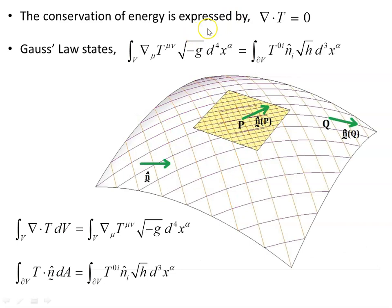The conservation of energy is expressed by ∇·T — the divergence of the energy-momentum tensor being equal to zero, as we saw in the last video. Gauss's law shows that an integral over a four-volume of the divergence of the energy-momentum tensor is equal to a spatial flux integral over a surface, where n-hat represents the normal vector to the surface. On a curved space we will have different normal vectors at different points, and that will affect whether or not we can evaluate this integral.